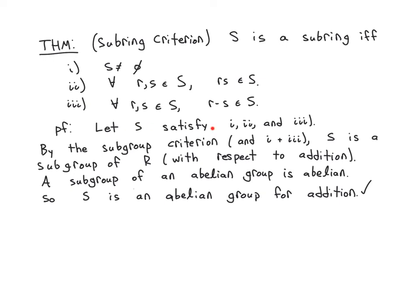So suppose S satisfies 1, 2, and 3. Now we want to show S has to be a subring. Well, if you look at just 1 and 3 together, that was the subgroup criterion for addition instead of multiplication. So that tells you that S is a subgroup of R with respect to addition. So if you just pretend multiplication doesn't exist for a moment, these two things together already tell us that you have a subgroup, an additive subgroup.